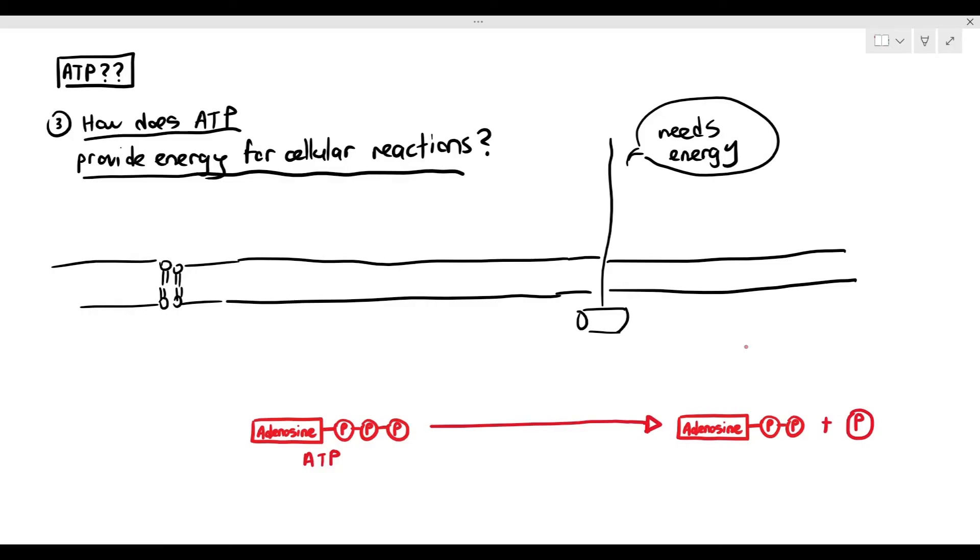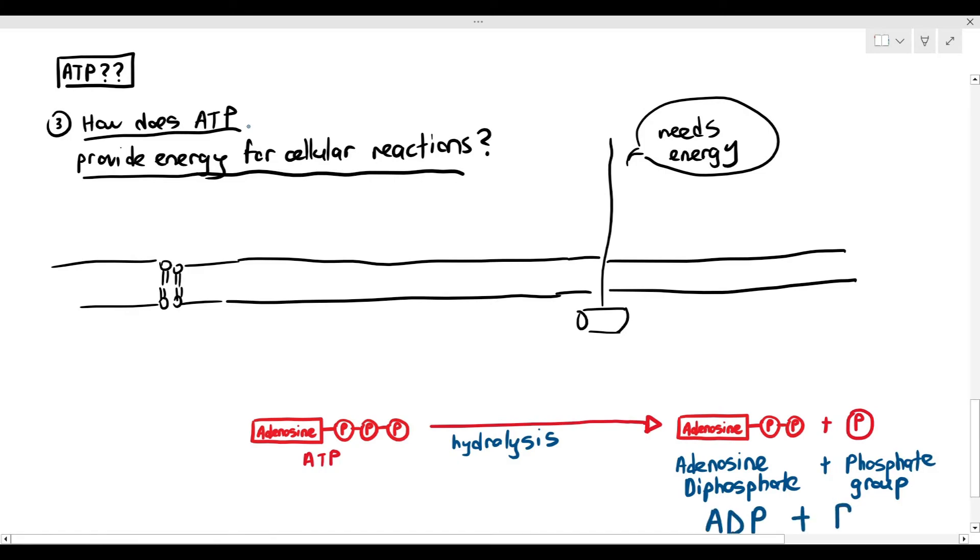Hydrolysis means chemical bonds are broken down using water, and now one of the phosphate groups has separated from the main branch. And now it becomes adenosine diphosphate, because adenosine is now linked or joined together to only two phosphate groups. That's why it's called diphosphate, plus the inorganic phosphate, Pi.